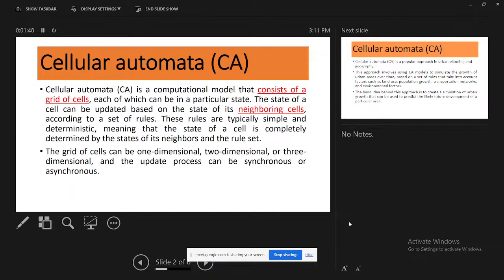According to a set of rules, these rules are typically simple and deterministic, meaning the state of a cell is completely determined by the state of its neighbors and the rule set. In the cellular method, suppose I have some cells as built-up area - then all the cells near the built-up area are also considered as built-up area.